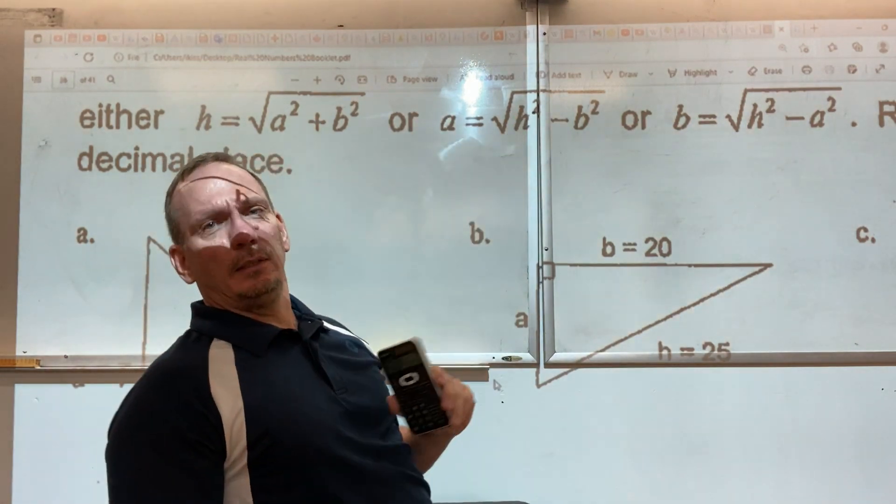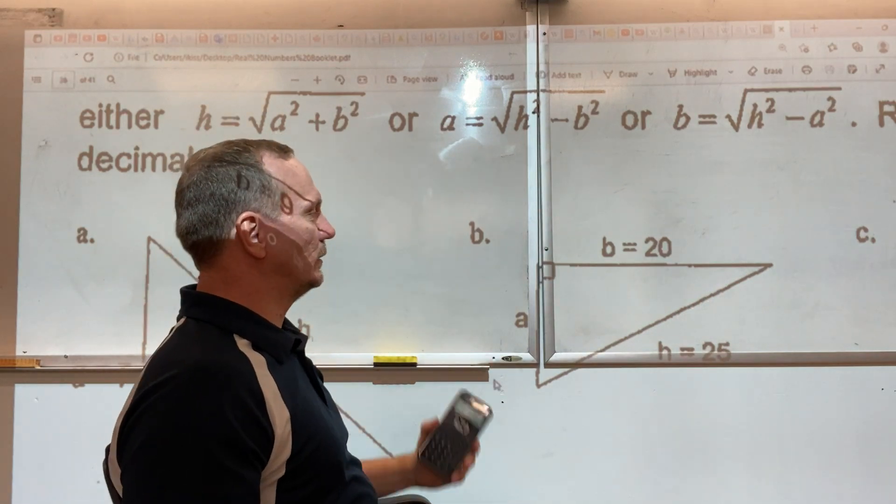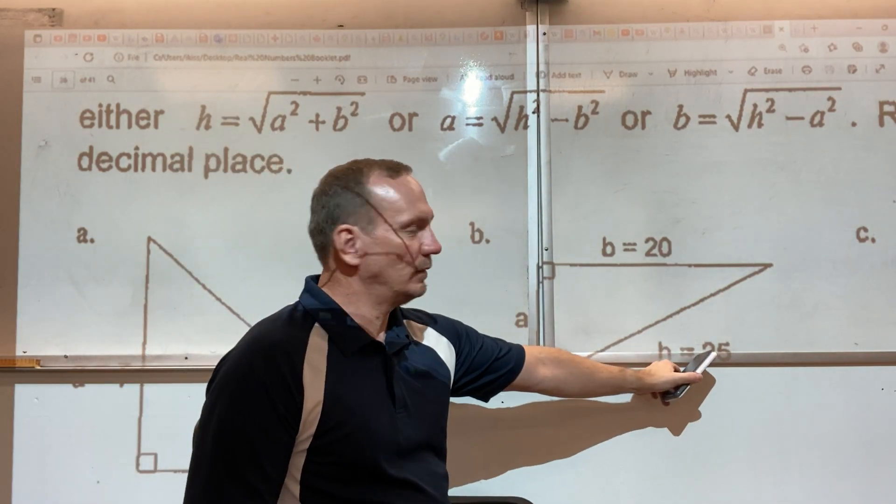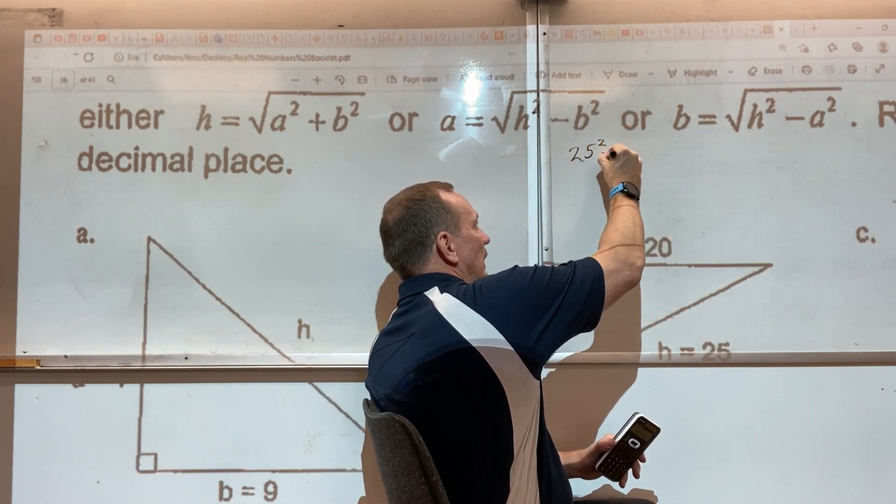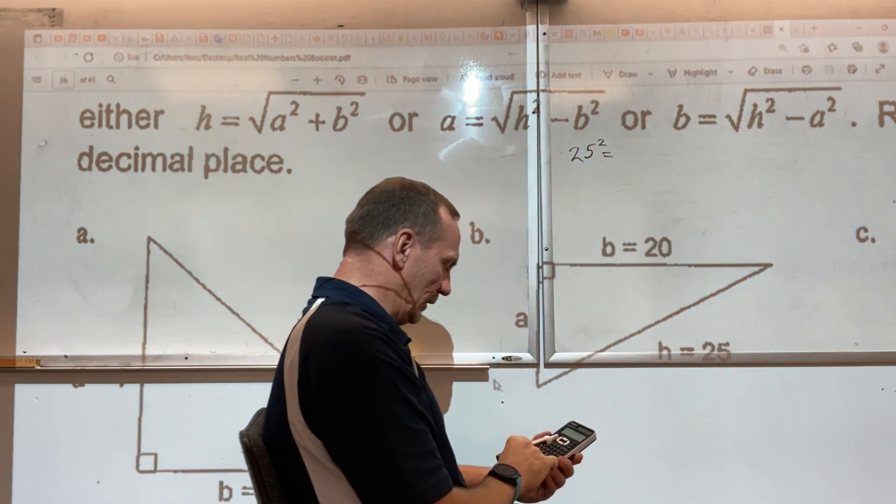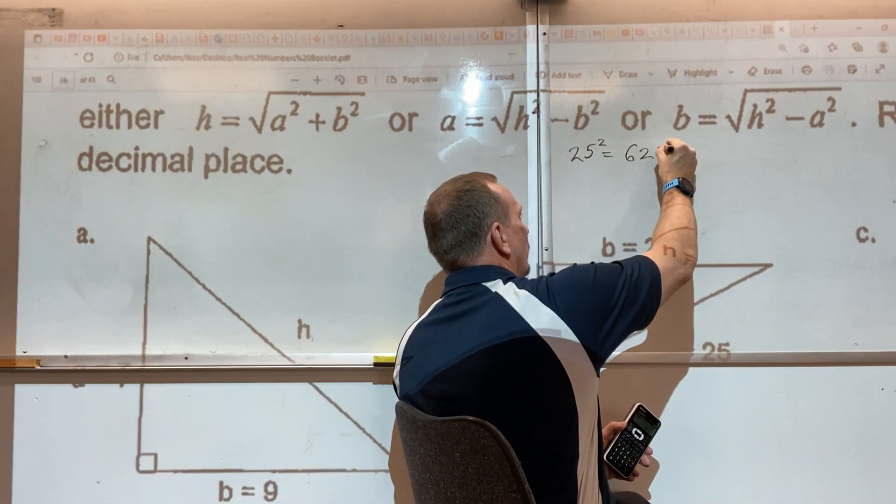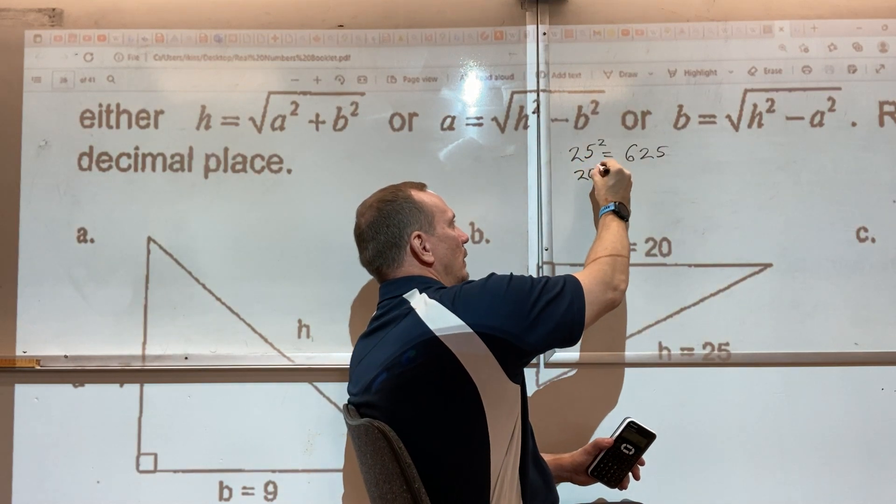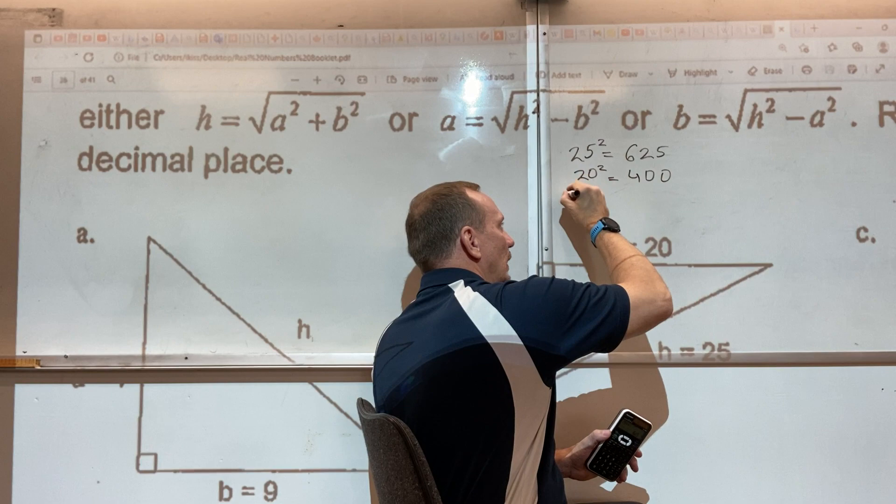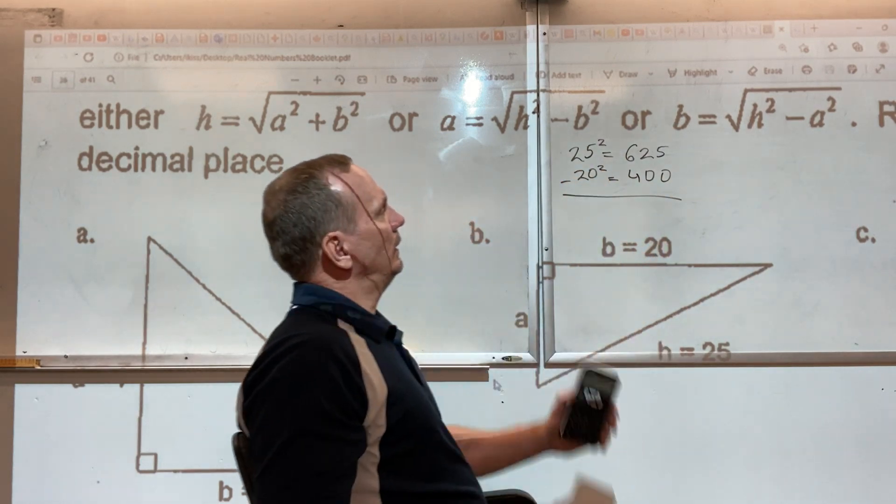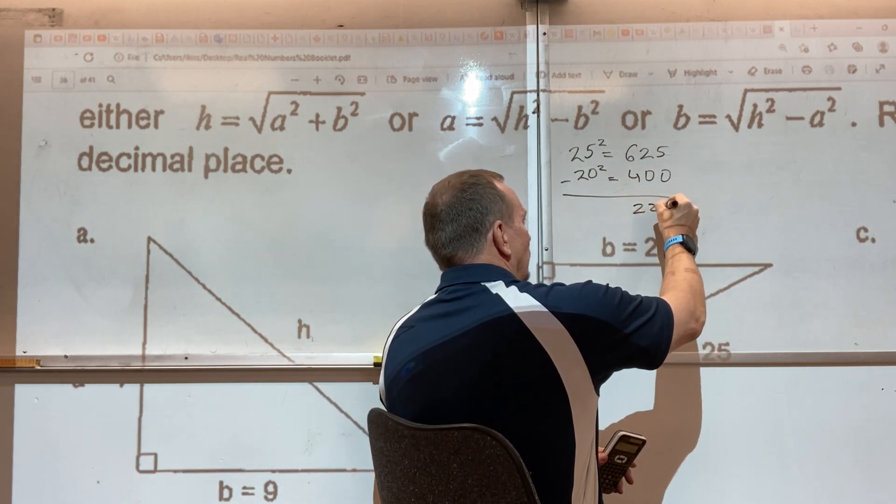We start with H, hypotenuse, in either one of these subtraction variations of the formula. So that one reads 25. So let's do that: 25 squared, and that number is 625. The next one is 20. Square that number, that's 400, that's an easy number. Then we need to calculate the difference of the squares, and it's 225.